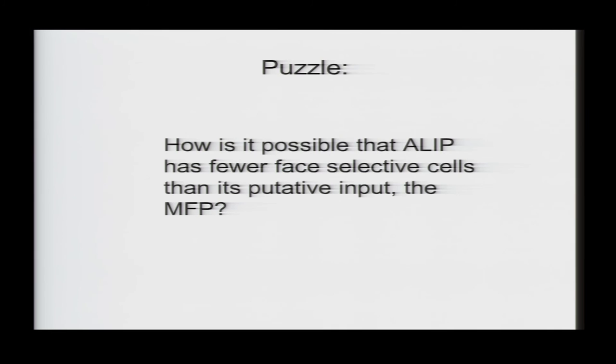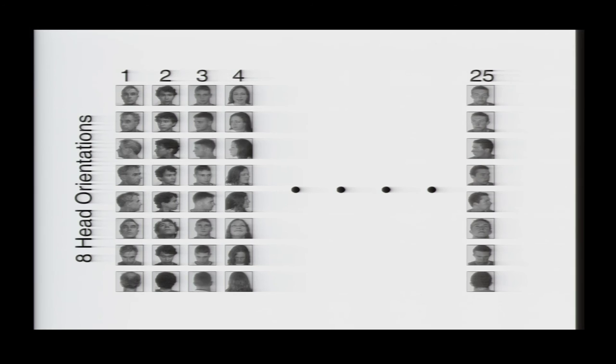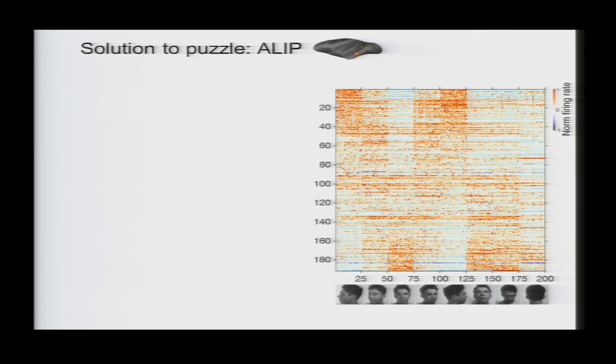So, this raises a puzzle. How is it possible that AL has fewer face-selective cells than its putative input, the middle face patch? And the answer to this puzzle became clear when we presented another stimulus set consisting of 25 different individuals at eight different head orientations. And here, you can see the responses of more than 180 cells in AL to these 200 stimuli. And they're sorted by the head orientation. So, the first 25 stimuli were 25 different people all looking to the left and so on. And I hope you can see that there's basically two populations of cells in AL. One that likes straight up and downward looking faces, and one that likes leftward and rightward looking faces. And I should point out that this mirror symmetry is a new property of AL that we never observed in the middle face patch.